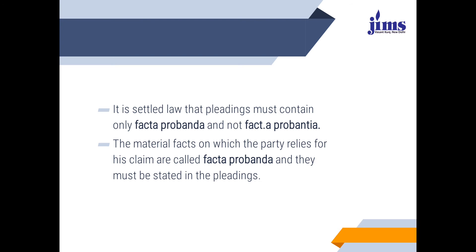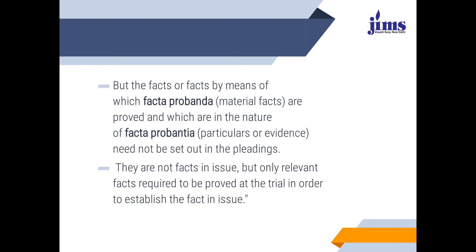Regarding how these concepts are used in the code: it is a rule of pleading under the Civil Procedure Code that a pleading must contain only the factum probandum and not the factum probans. One should state in the pleading only the material facts on which the party relies — those are the factum probandum and they must be stated in the pleading. The means by which the factum probandum is to be established need not be stated in the pleading.